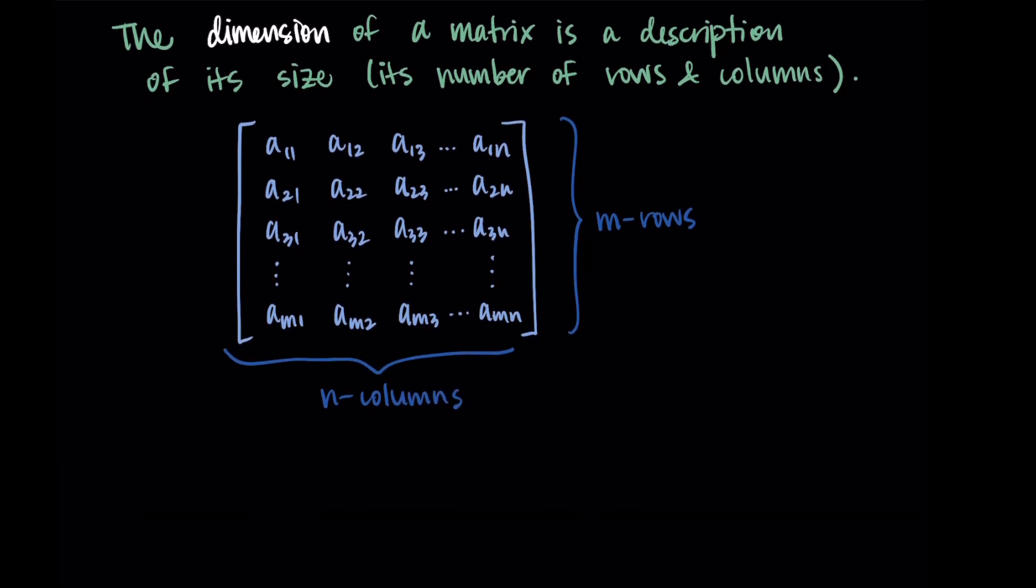So in general, if we have n columns and m rows, the dimension of this matrix is m by n, where m is the number of rows and n is the number of columns.